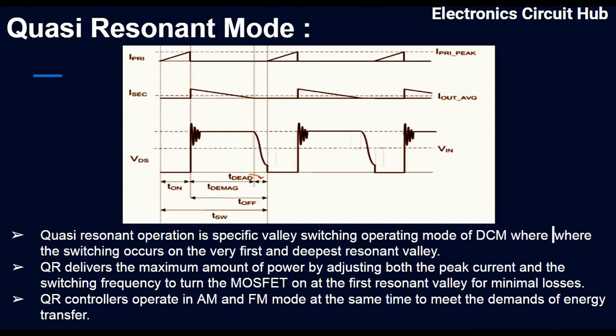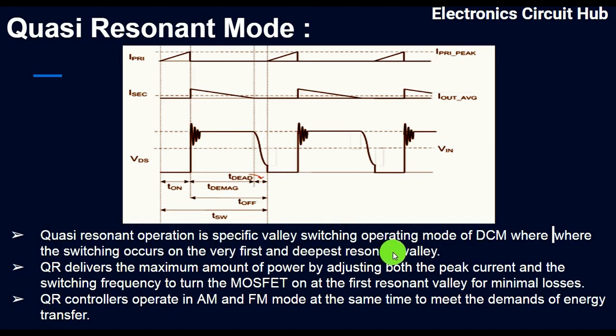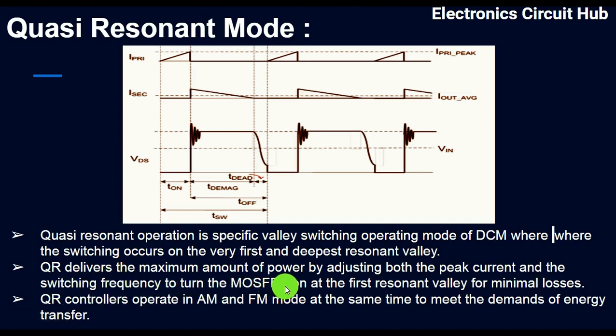Because the drain-to-source voltage is low at the first valley, you have lower switching losses. Comparing QR mode to valley switching mode: valley switching works in frequency modulation where switching can happen at any valley. In QR mode, switching always happens at the very first and deepest valley. QR delivers maximum power by adjusting both peak current and switching frequency to turn on the MOSFET at the first resonant valley for minimum losses.